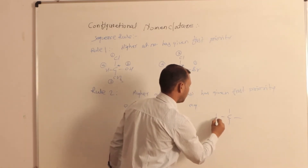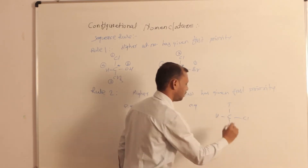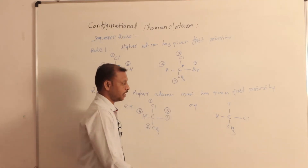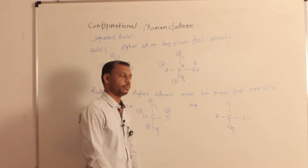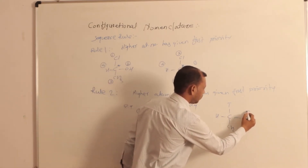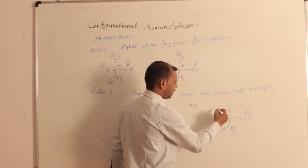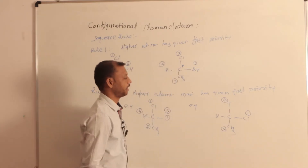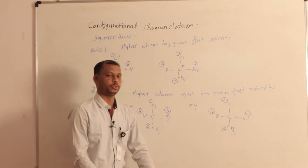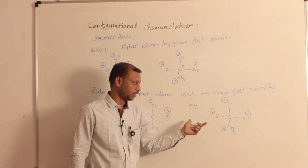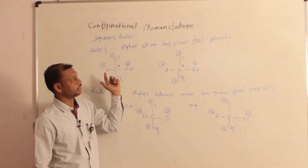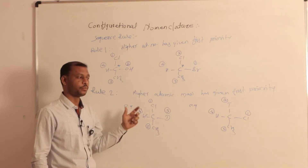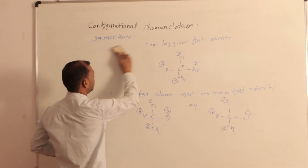Another example with hydrogen and tritium: they are isotopes with the same atomic number, but hydrogen has mass number 1 and tritium has mass number 3. So chlorine gets first priority, carbon second, tritium third (higher mass number), and hydrogen last. Rule first is for directly attached atoms with higher atomic number; rule second is for isotopes, where higher mass number gets first priority.